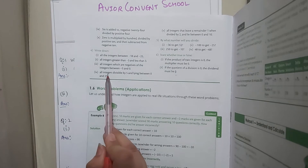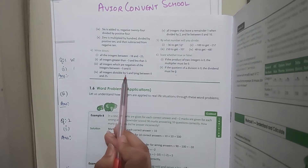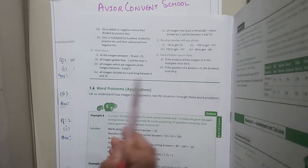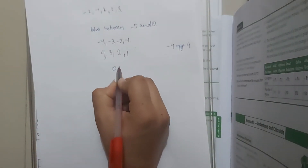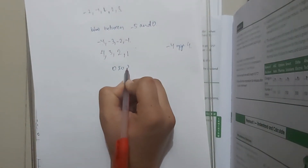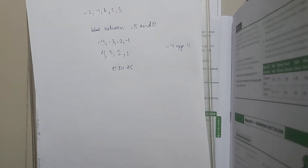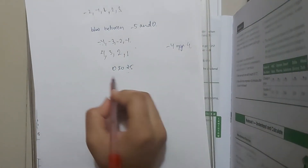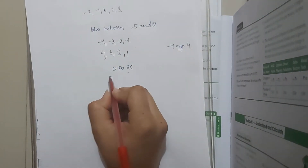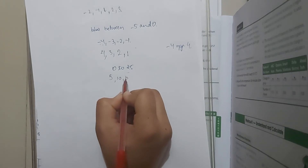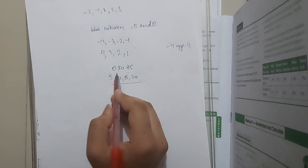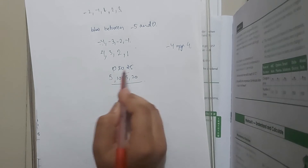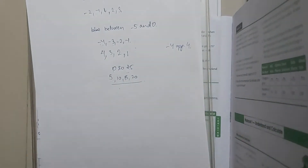Next: all the integers divisible by 5 and lying between 0 and 25. We simply read the table of 5. What are the terms between 0 and 25 from the table of 5? 5, 10, 15, 20. These are the terms between 0 and 25 which are divisible by 5.